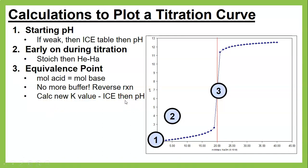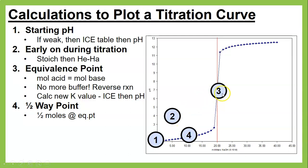Another special point is the halfway point — when you're halfway to the equivalence point in terms of moles. At the halfway point, a mathematical coincidence occurs: the pH equals the pKa. So if you want to find the pKa of an acid, do a titration, find the equivalence point, work back to the halfway point, and you can determine the K value.